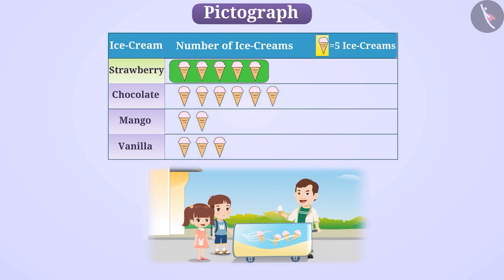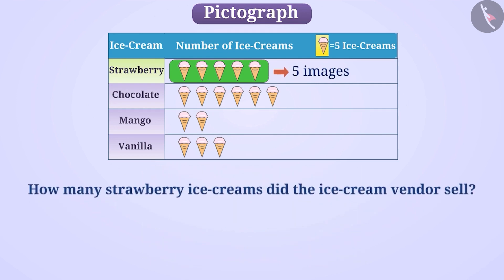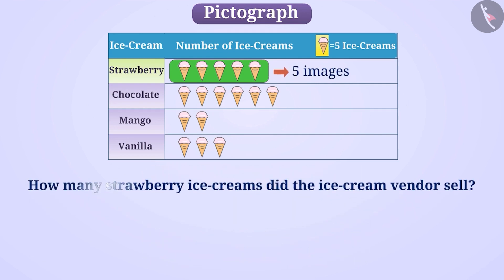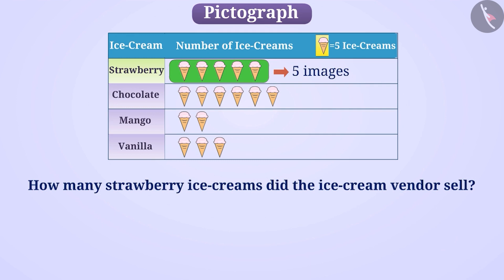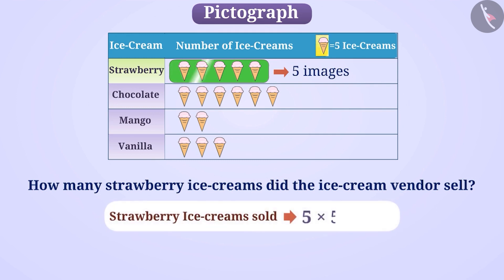In the row of strawberry ice cream, 5 such images are drawn. Now, tell me how many strawberry ice creams did the ice cream vendor sell? He sold 5 multiplied by 5, which is equal to 25 strawberry ice creams.